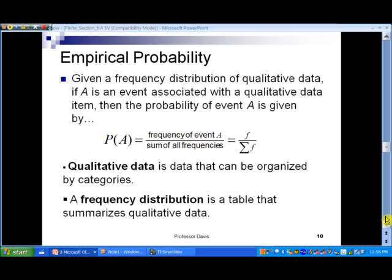We can say given a frequency distribution of qualitative data, if A is an event associated with a qualitative data item, then the probability of A is given by the number of times A occurs divided by the sum of all the frequencies. Now, qualitative data.